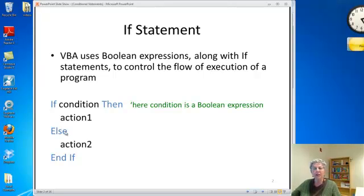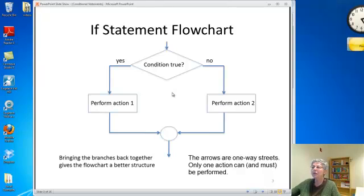If there is an alternative, we'll say else, and then an action you want to take if the condition is false. The flowchart looks like this: you test whether the condition is true. If it's true you do the first action that follows the then. If it's false you do the second action that follows the else. Then we bring the branches back together and continue the flow of the program.